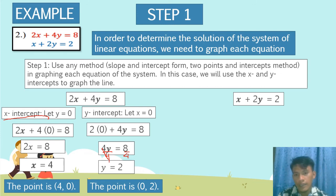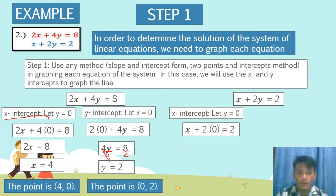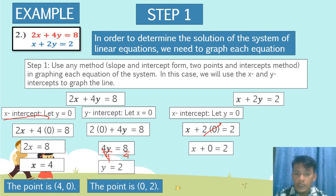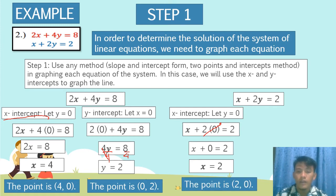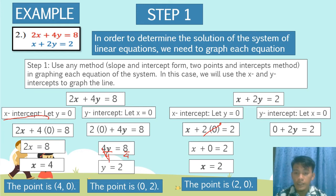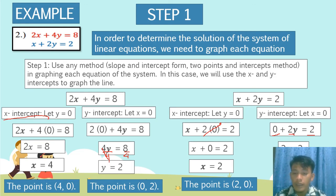Next, we use the second equation, x plus 2y equals 2. To get the x-intercept, let y equal to 0: x plus 2 times 0 equals 2, so x equals 2. The point is (2, 0). To get the y-intercept, let x equal to 0: 0 plus 2y equals 2. Dividing both sides by 2, y equals 1. The point is (0, 1).